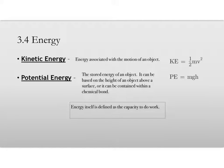Kinetic energy is the energy associated with the motion of an object. You can see the equation for determining the kinetic energy of a moving object. It is one-half mv squared, where m is the mass of the object and v is the velocity.